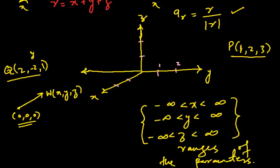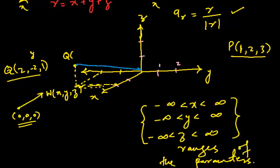For a position vector ending at (2, -2, 1), since we have minus two in y I need the negative y direction. You travel two in the x axis, minus two in the y axis, and one in the z axis. This gives us a position vector at point Q — the arrow goes from the origin and ends at the point (2, -2, 1).